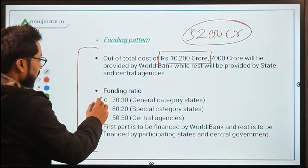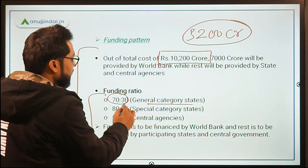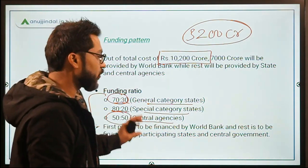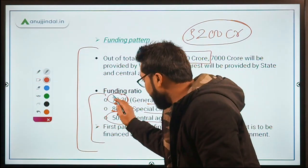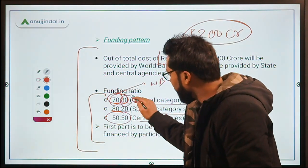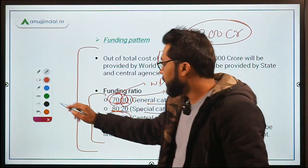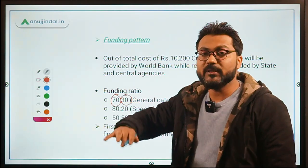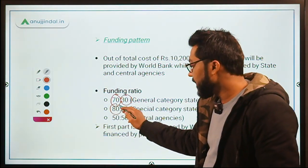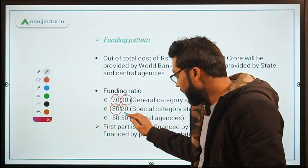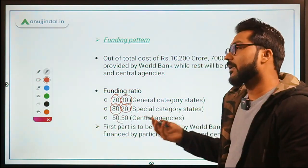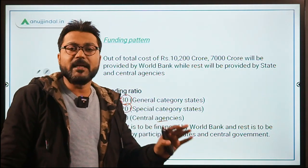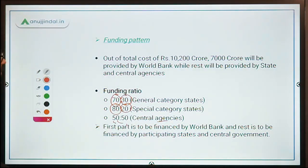Regarding the funding ratio: for general category states it is 70:30; for special category states it is 80:20; and for central agencies it is 50:50. In the 70:30 ratio, 70 percent is contributed by the World Bank while 30 percent is contributed jointly by the centre and states. Similarly, for special category states, 80 percent is from the World Bank and 20 percent from centre and states, and for central agencies 50 percent each.